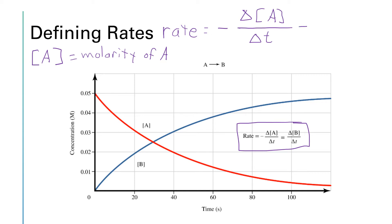If instead we have equipment that's set up to monitor chemical B, we can define the reaction rate as being the change in [B] over time. Since B is a product, its change is a positive number, and so these two expressions should be equal to each other, because for every one A that we lose we gain one B. There's a one-to-one stoichiometry between A and B.